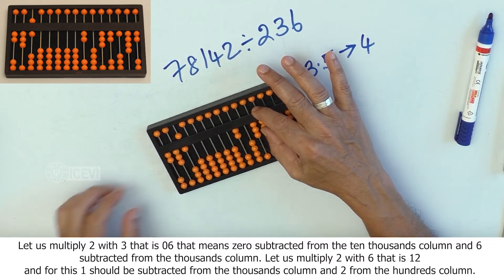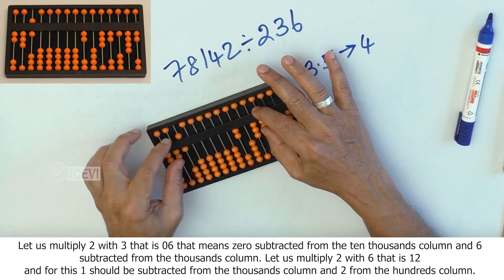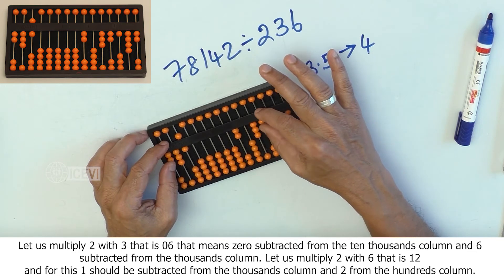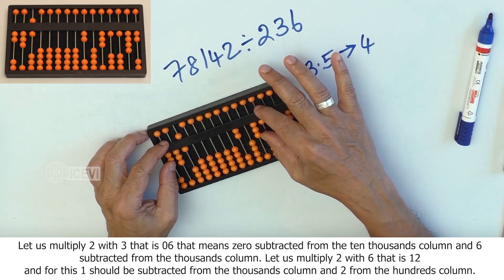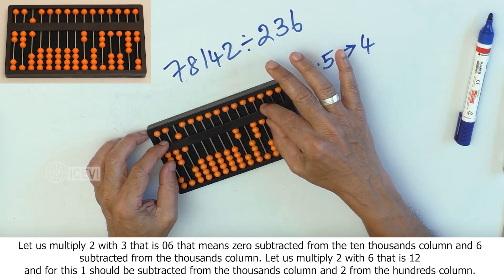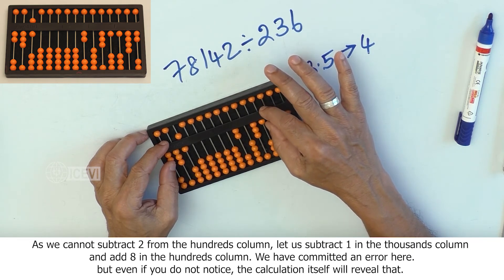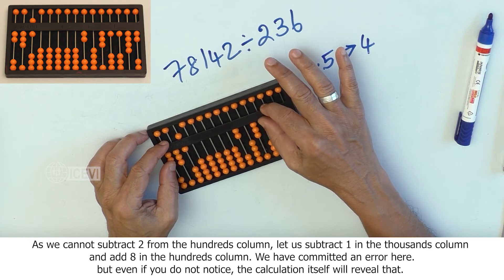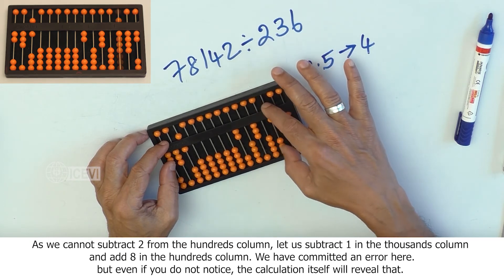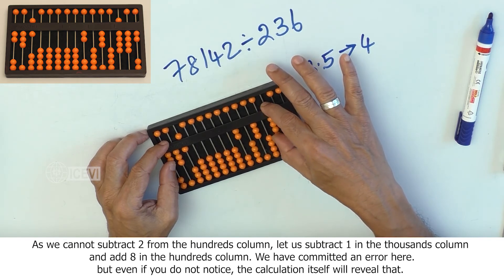Let us multiply 2 with 6 that is 12 and for this 1 should be subtracted in the 1,000 column and 2 in the 100 column. As we cannot subtract 2 from the 100 column, let us subtract 1 in the 1,000 column and add 8 in the 100 column.